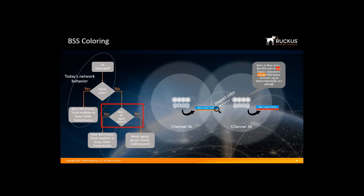Next, you ask if the RSSI signal is greater than the alternative signal detected — for example, is it greater than minus 62 dBm? If yes, then you treat the medium as busy and defer transmission. If no, this means the signal is weak and you ignore the frame and start transmitting. Since both APs are on the same channel, this technology improves spatial reuse efficiency and performance.